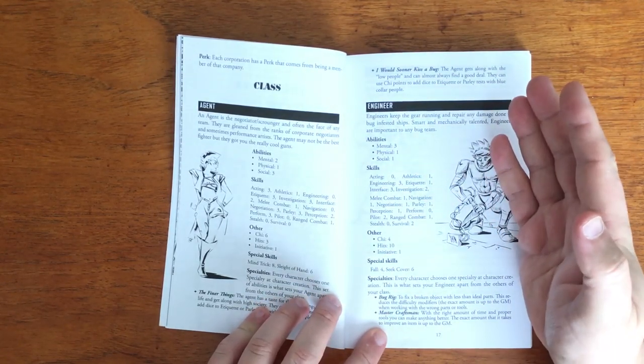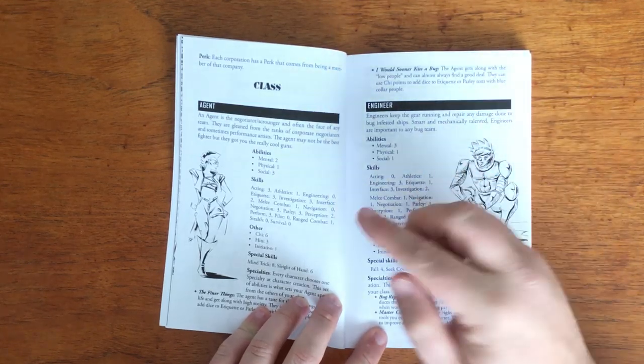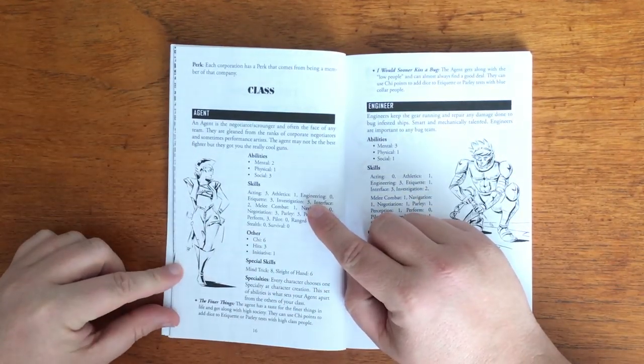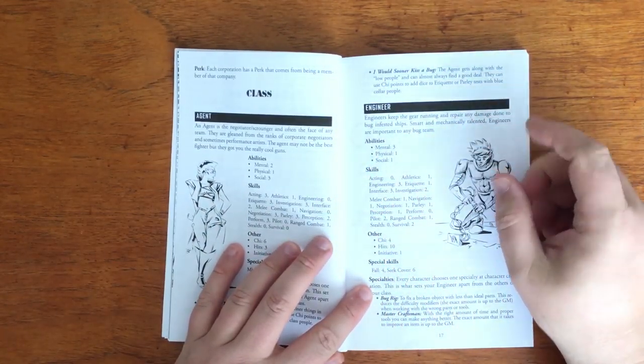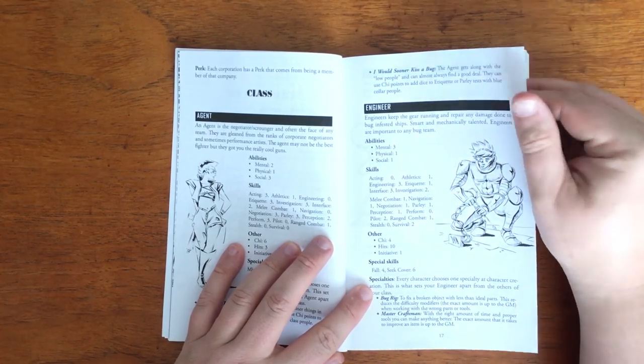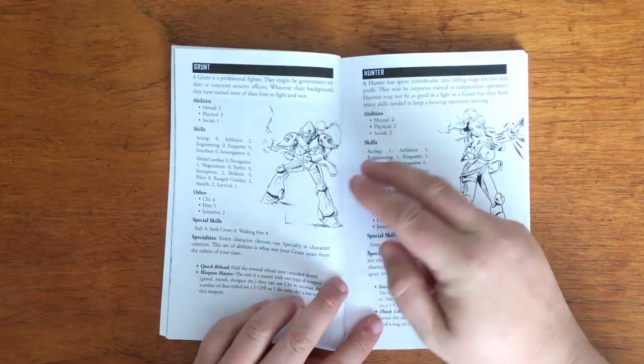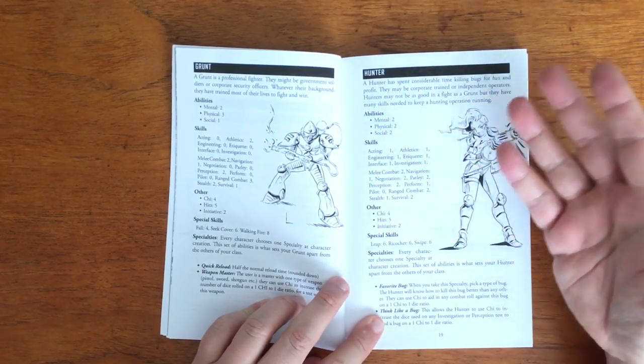It then moves on to the four basic classes: Agent, Engineer, Grunt and Hunter. Agents are often the face of the team, using their wiles to negotiate and bluff their way through life, as well as often being able to get good deals. Engineers are mechanically talented, smart and are skilled at repairing and running gear. Grunts are professional fighters who are trained to fight and win and Hunters are specialists in bug hunting and spend their time doing this for fun and profit.